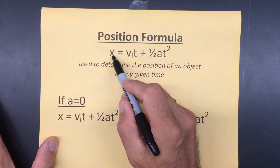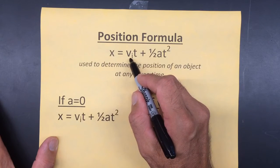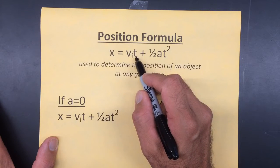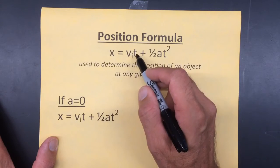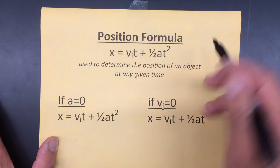x is the position of the object, v_i is the initial velocity of the object, t is the time that the object was traveling to change its position, and a is the acceleration of the object.